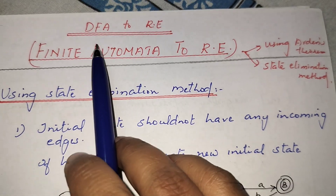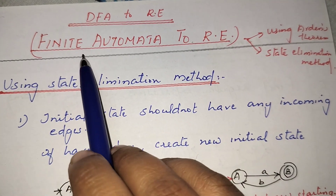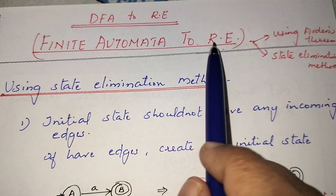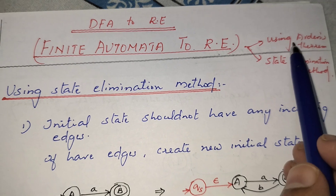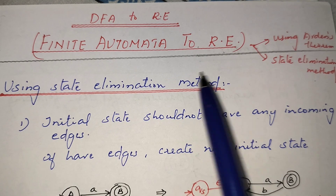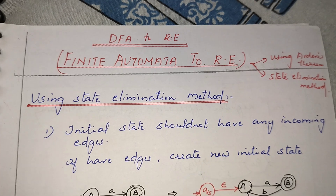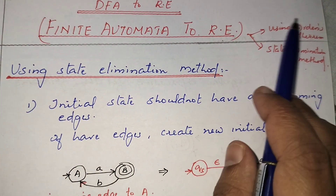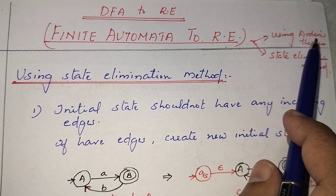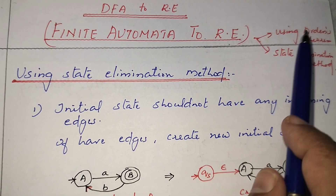The next topic is converting a DFA to a regular expression — that is, finite automata to regular expression conversion. We can use two methods: either Arden's theorem or the state elimination method. In this video, I am going to explain the state elimination method, because for competitive examinations, Arden's theorem involves substituting equations which can take more time if the equation is large. State elimination is simpler.